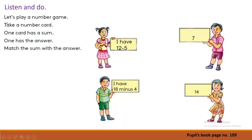Let's see how to play this game. Take a number card — one card has a sum, one has the answer. Match the sum with the answer. It's very easy. Take a number card; one card has a sum. You have to match the sum with the answer.